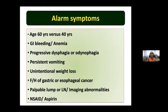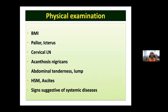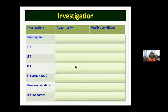Presence of more than one alarm symptom increases the risk further. On examination, quickly look for obesity or recent weight loss, pallor, icterus, cervical lymph nodes, acanthosis nigricans, abdominal tenderness or lump, features of hepatosplenomegaly, and signs of systemic diseases.